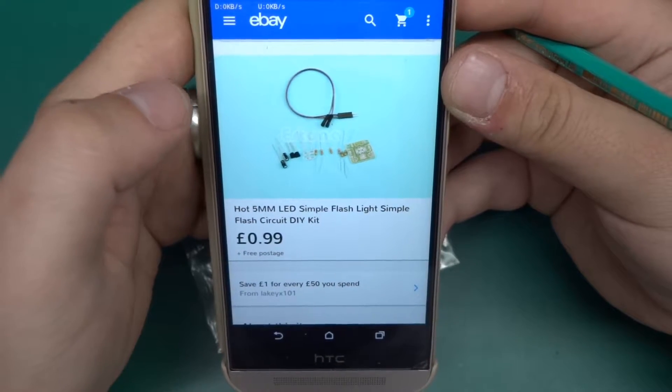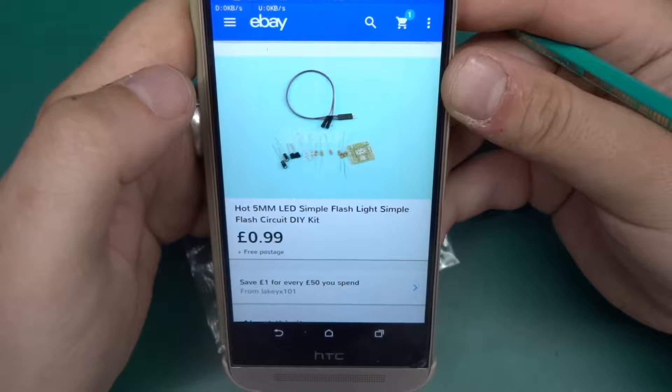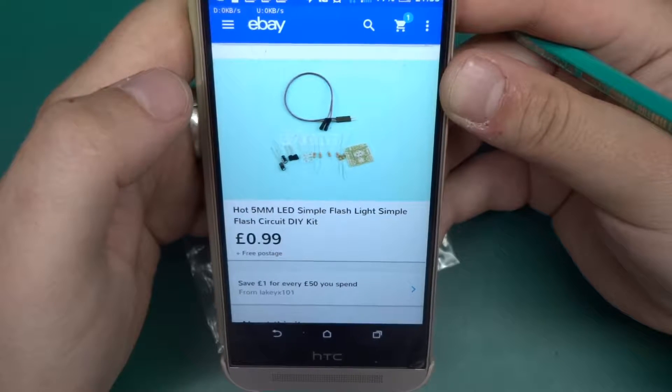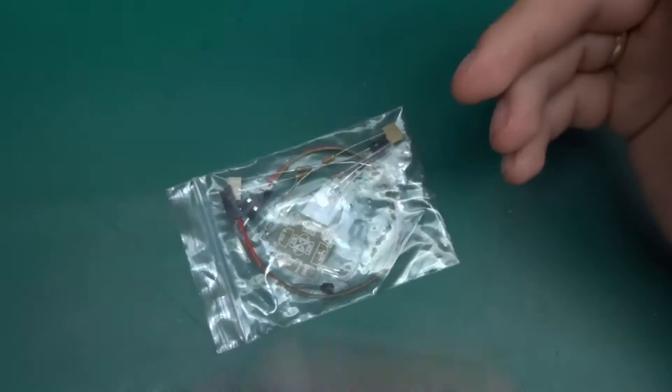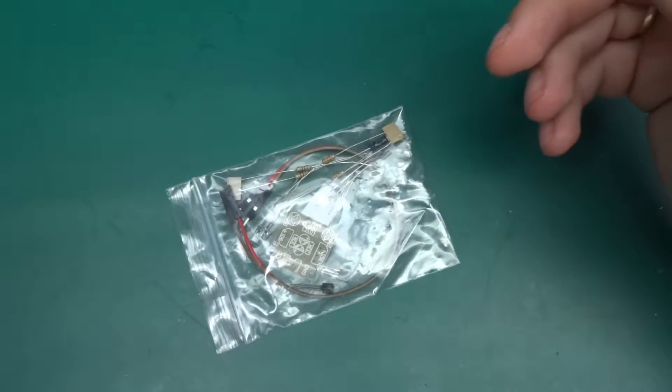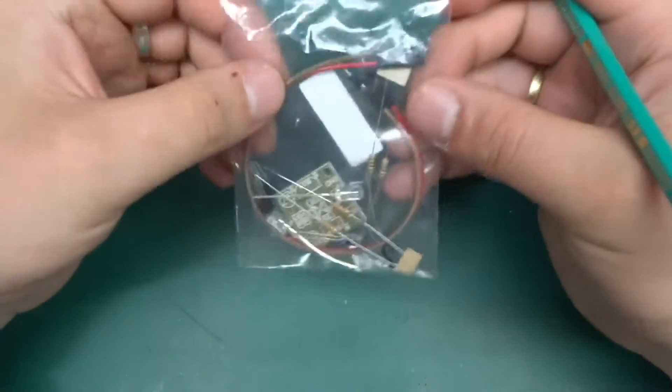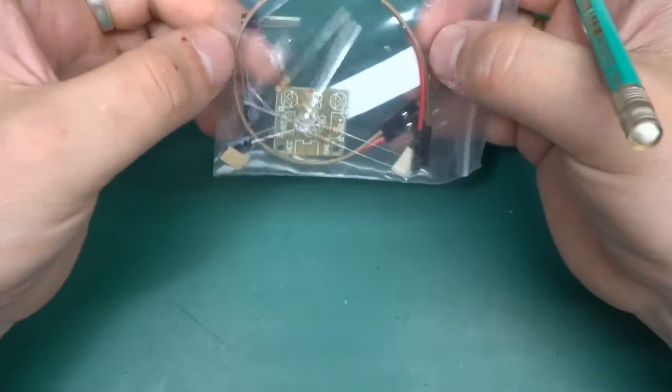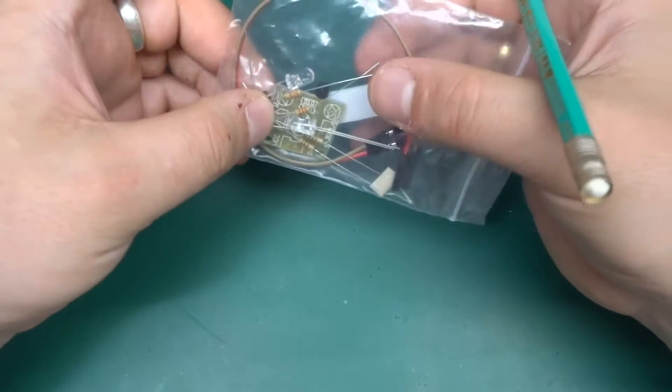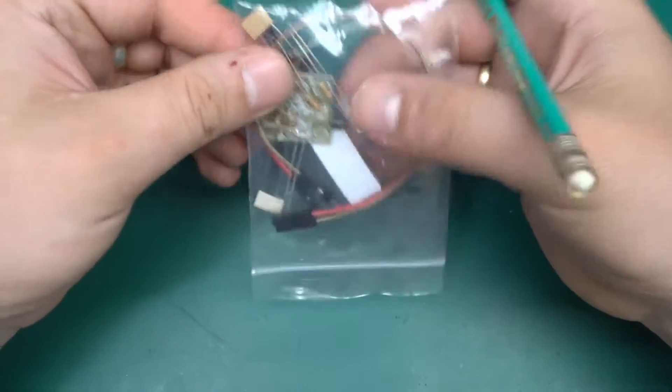As you can see in the picture, there's literally just a handful of components: two LEDs, two transistors, two caps, and six resistors. That's about it - a PCB and a piece of wire. When I was browsing eBay for random electronic stuff, I saw this.